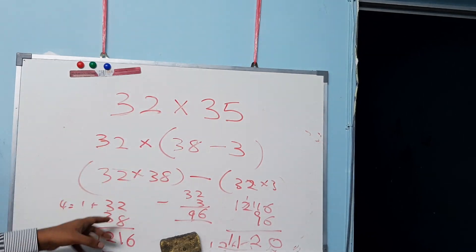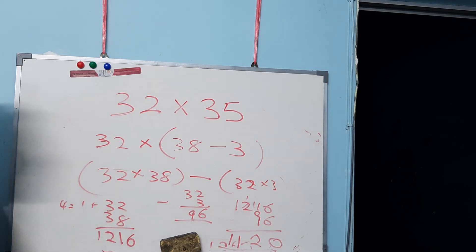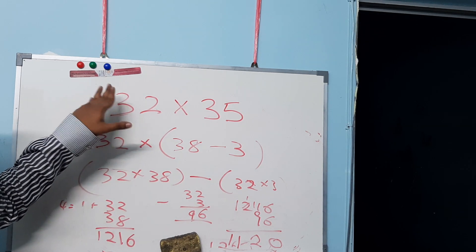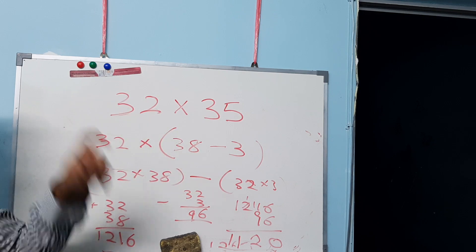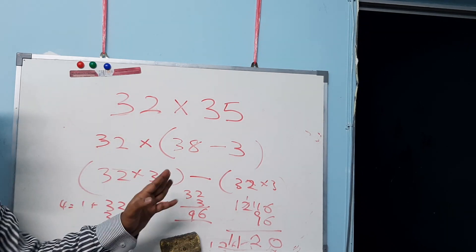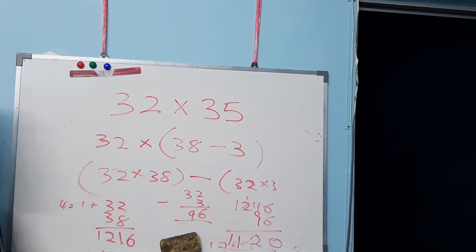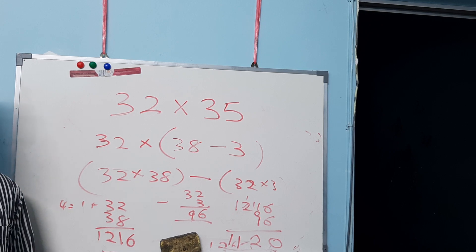Ultimately, as long as the left-hand side value of both numbers is a common digit, you can apply this rule and solve it much more easily than the conventional method. Thanks for watching — we'll continue in the next videos going more in depth into multiplication techniques.